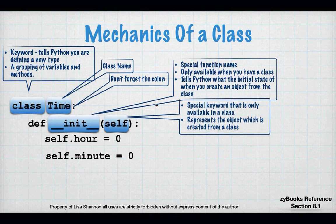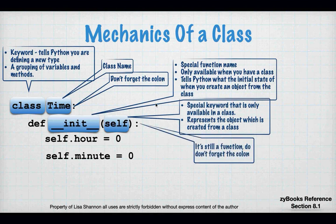Then there's the word `self`. Self is the object, and it's what makes it what they call an instance function. An instance function has an awareness of the object that it came from. Remember: the class is a blueprint, the object is the real thing. So the functionality in the class has to have some way of knowing where it came from — the word `self` is how it knows that.